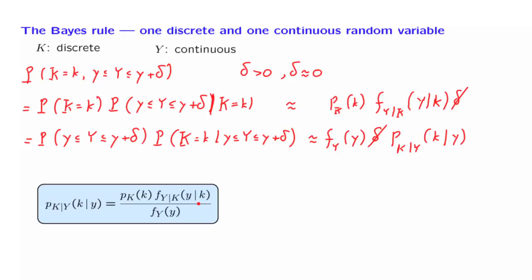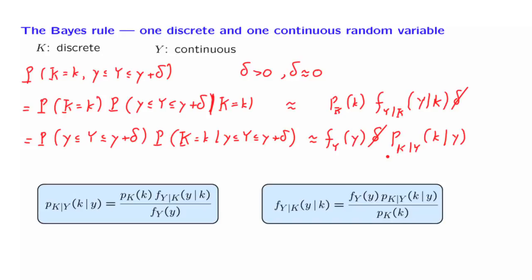Alternatively, we can move the other term to the denominator and obtain a different version of the Bayes rule. This version applies if we are trying to make an inference about a continuous random variable Y, given that we know the value of a related discrete observation K.